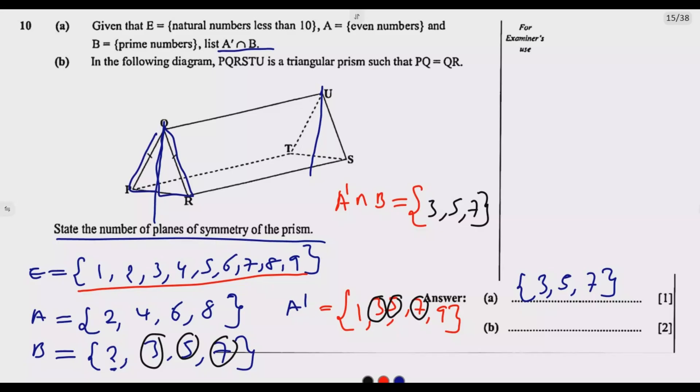Now, someone will be tempted to say, how about the horizontal plane halfway across here? It's not. It's no longer maintaining this triangular prism. You see, it's destroying that. So there is only one line of symmetry. So state the number, so one plane of symmetry, that's the answer. So it's one plane of symmetry, just one plane of symmetry is the answer.